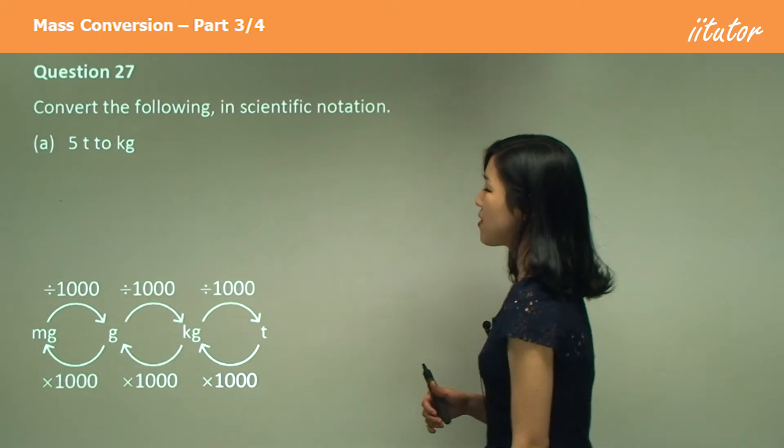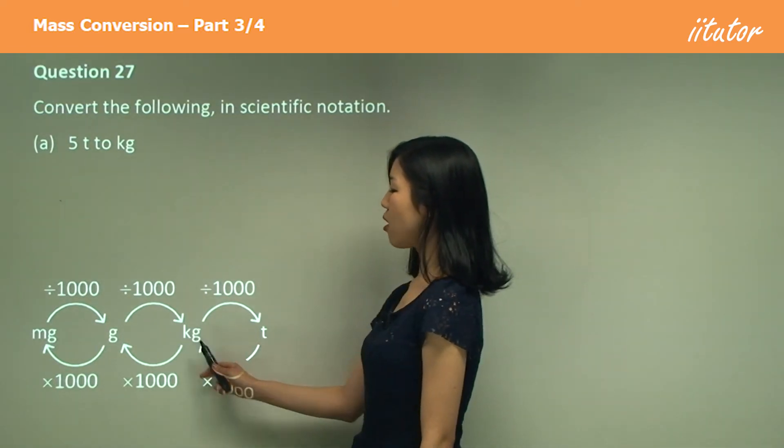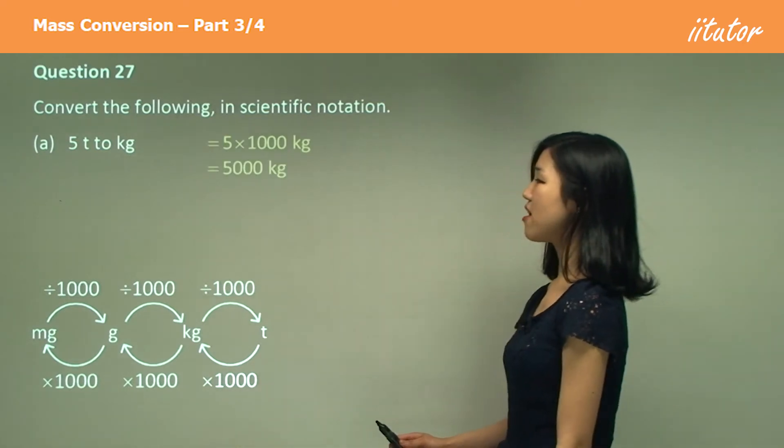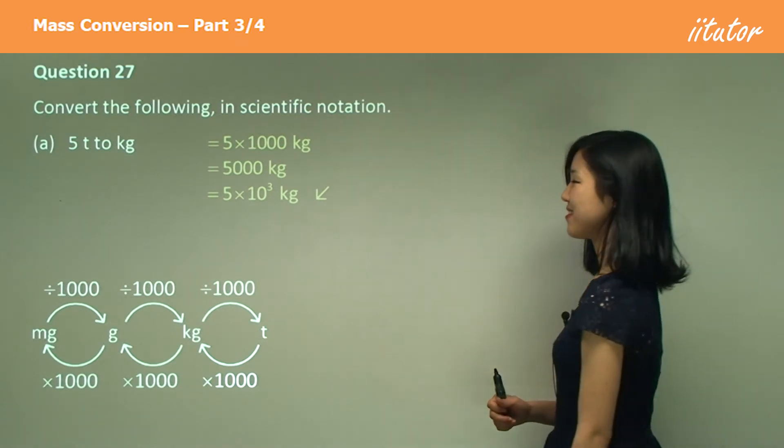Okay, we want to put these in scientific notation. Tons to kilograms, so large to small, multiply by a thousand, five thousand. And then that will be five times ten to the power of three, isn't it?